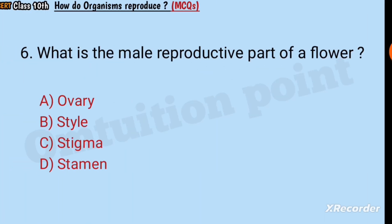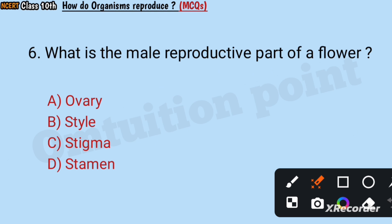Question number six: What is the male reproductive part of a flower? Ovary, style, stigma, or stamen? Answer: Stamen.